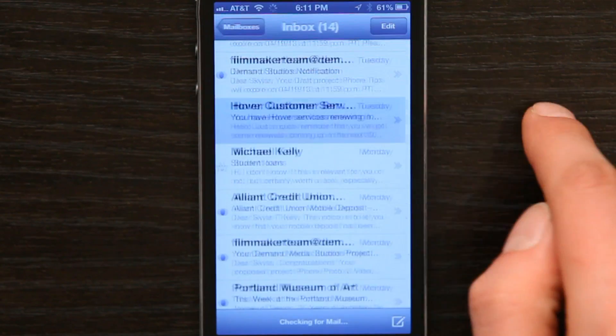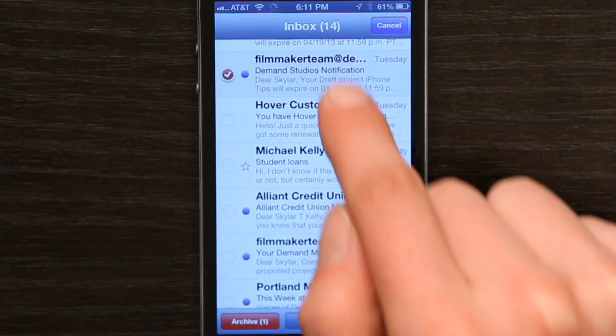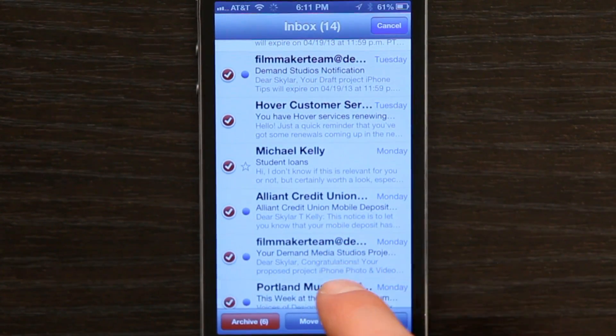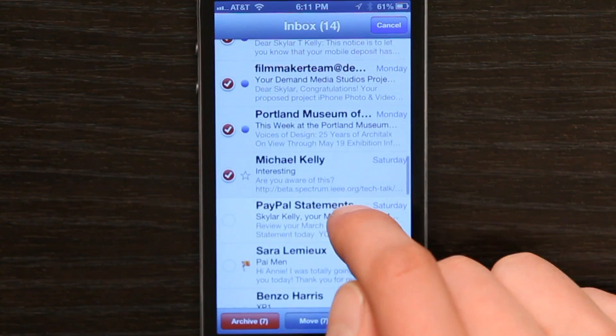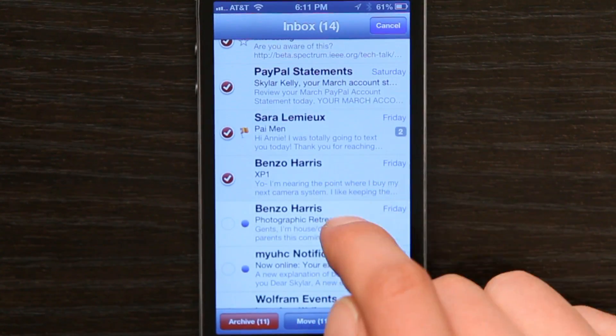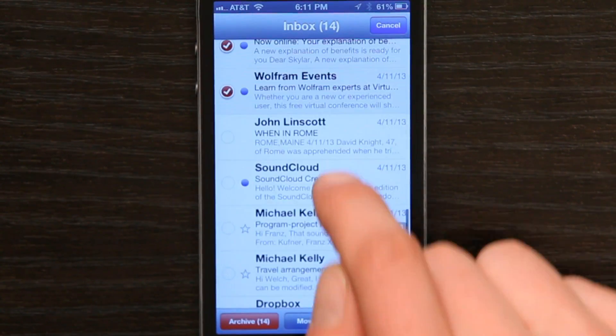So let's walk through it. Open up mail and tap edit. Once you've tapped edit, what you can see here is that I can check multiple email messages to erase simultaneously.